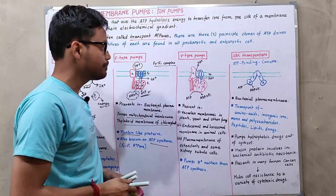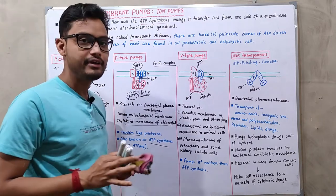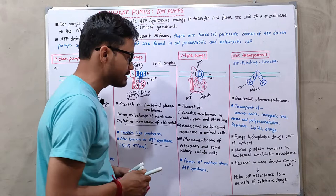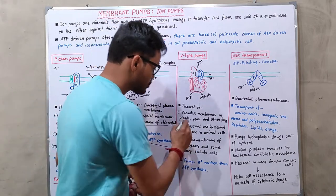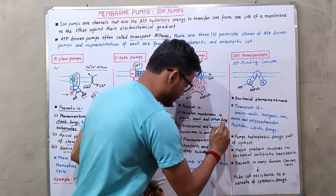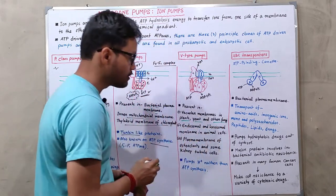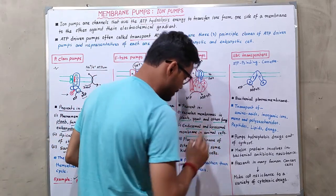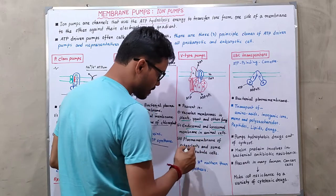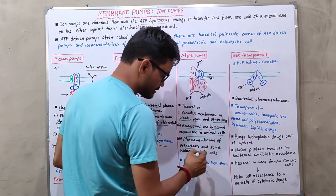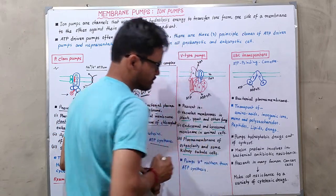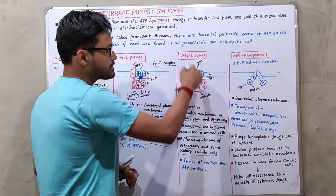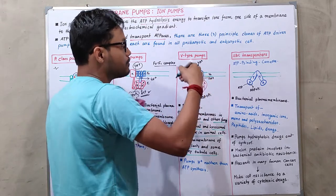The third type is V-type pumps, which are present in vacuolar membranes of plants, yeast, and other fungi. They are also found in endosomal and lysosomal membranes in animal cells, as well as in the plasma membrane of osteoclasts and kidney tubule cells.